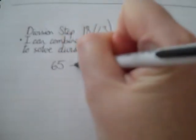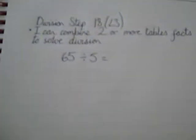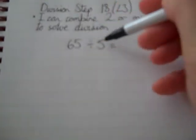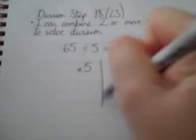So for example, we might be doing 65 divided by 5. 65 divided by 5 means how many 5s are there in 65? So we need to think about multiples of 5, which we should already know.